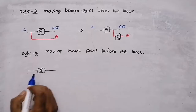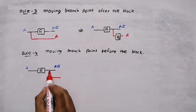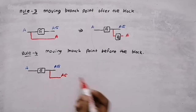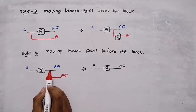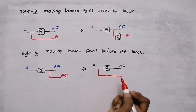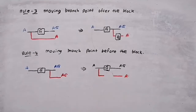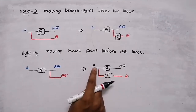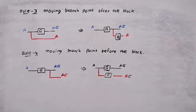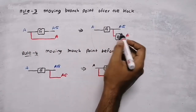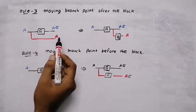Rule number four. For a block with input A and output A·G, suppose I have a branch at the output — the branch output is A·G. Now I move this branch point before the block. The line before the block carries A, so the branch output becomes A. But I need A·G, so I place a block G in that branch: A × G gives A·G. So when moving a branch point after the block, multiply by 1/G in that branch; when moving before the block, multiply by G in that branch.